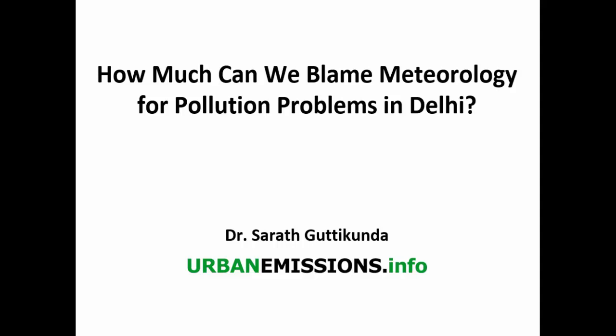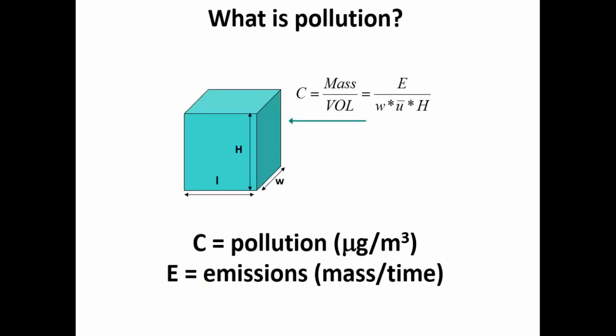We know that air pollution in Delhi is bad. It's partly because of total emissions in Delhi and also partly because of meteorology. So let's find out how much we can blame meteorology for pollution problems in Delhi. What is pollution? We measure that in terms of micrograms per meter cube. There are many different pollutants and each of them have their own standards. But at the end of the day, concentration C is mass over volume. Mass is basically your total emissions — this can be tons per hour, tons per day, tons per year.